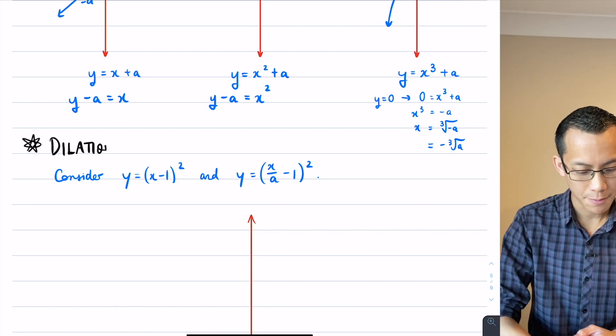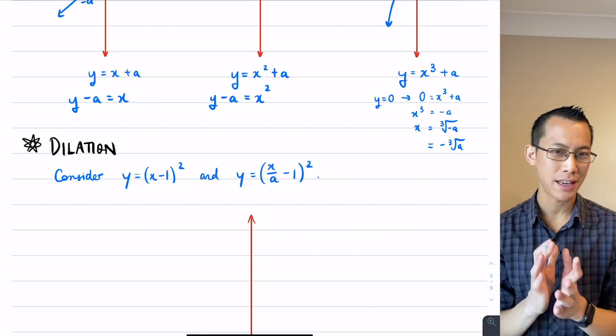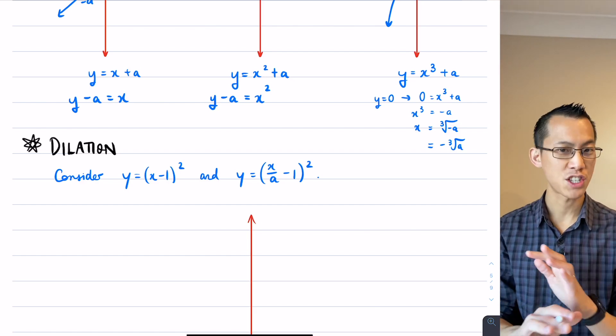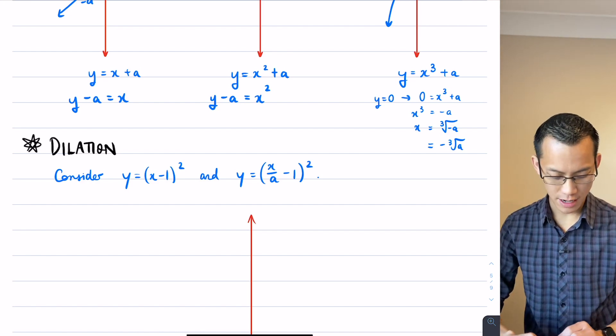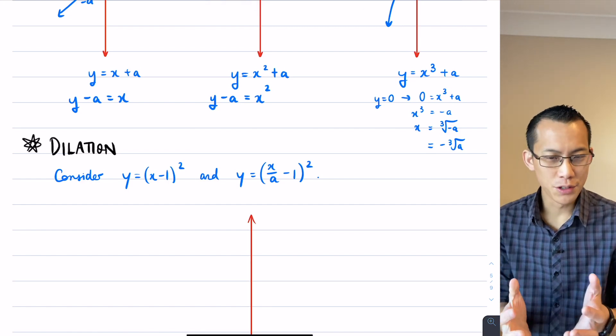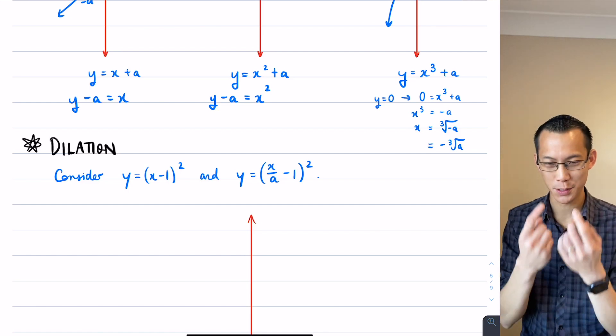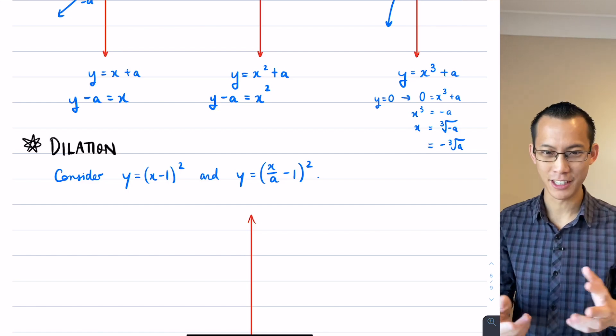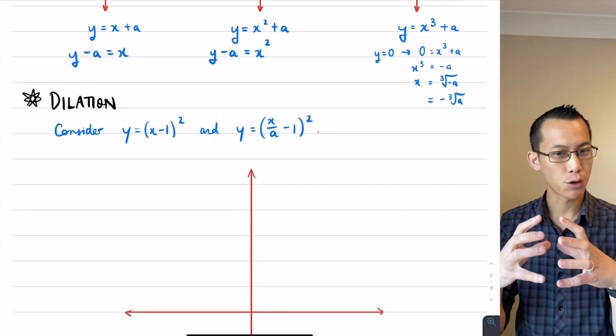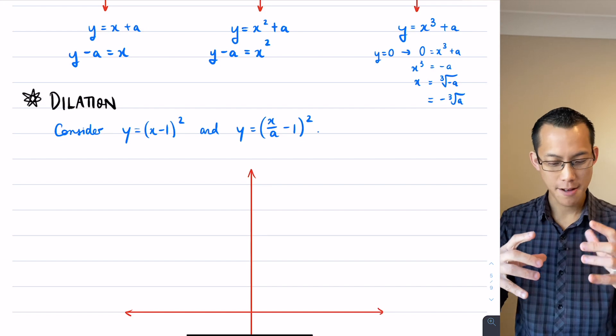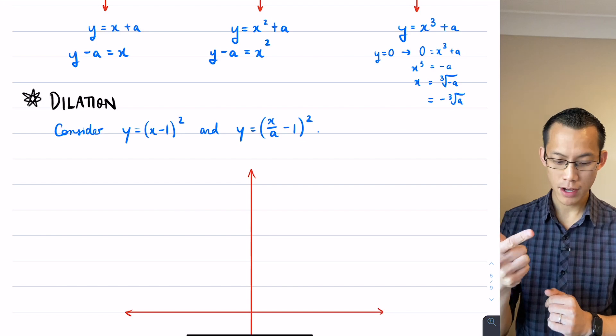So when we think about translation, we're thinking about the graph staying exactly the same size but then shuffling around in different places. The scale remains unchanged. But when we think about dilation, I don't know how many of you have had to go to like an ophthalmologist or an orthoptist and had your eyes dilated, right? When you go into a dark room, of course your pupils get bigger so you can see better and you can absorb more light. That's the same idea here. We're thinking about changing the scale of the graph. They're getting bigger and smaller and just like with translation, we're going to think about it first horizontally and then vertically.